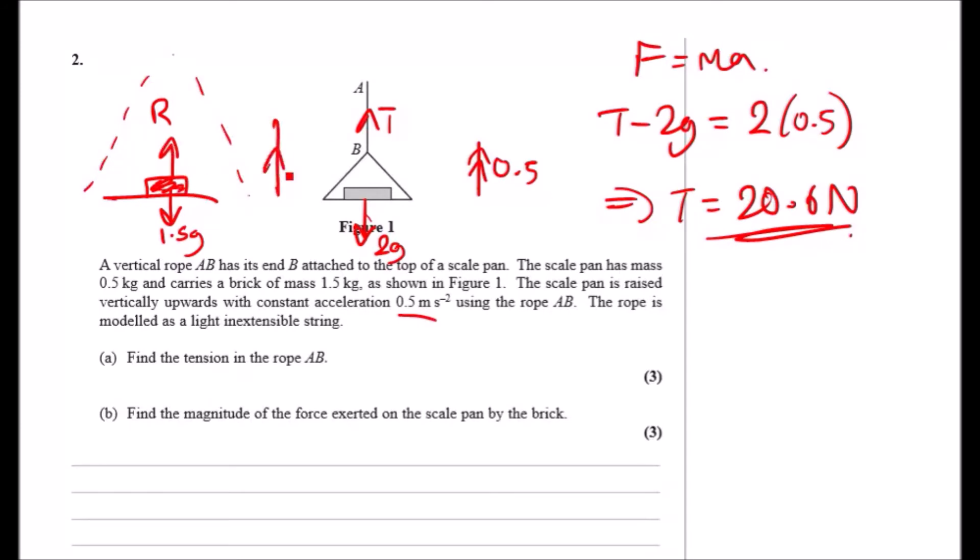That's what they want. So all they really want to do is simply resolve the inside of the scale pan. Same method using F equals ma. We're going to have R minus 1.5g, and this will equal 1.5a. Oh yeah, a is of course 0.5.